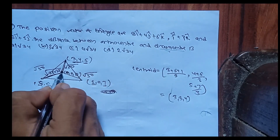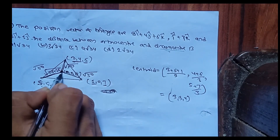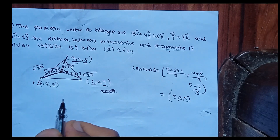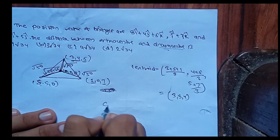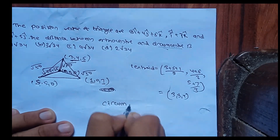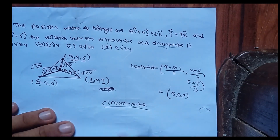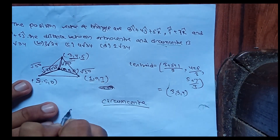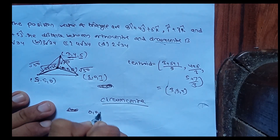Using the property that the circumcentre is equidistant from all vertices. The circumcentre for this triangle — if it is a right-angled triangle — lies at the midpoint, effectively at (0,0,0) relative to the configuration.